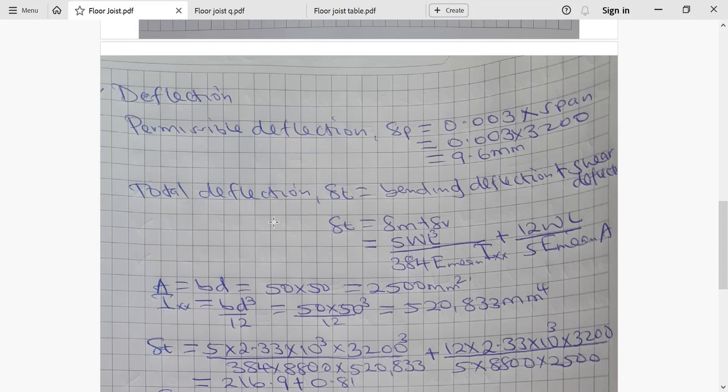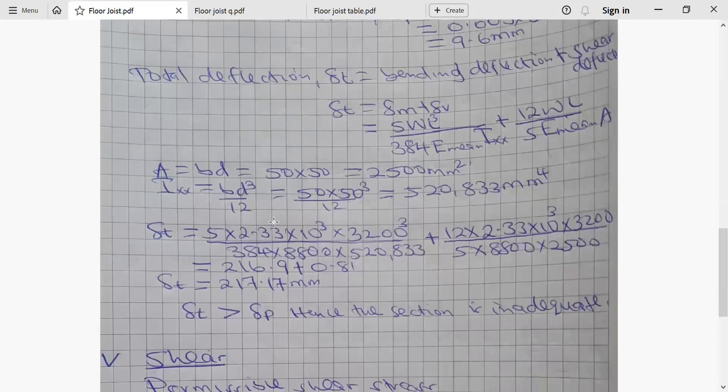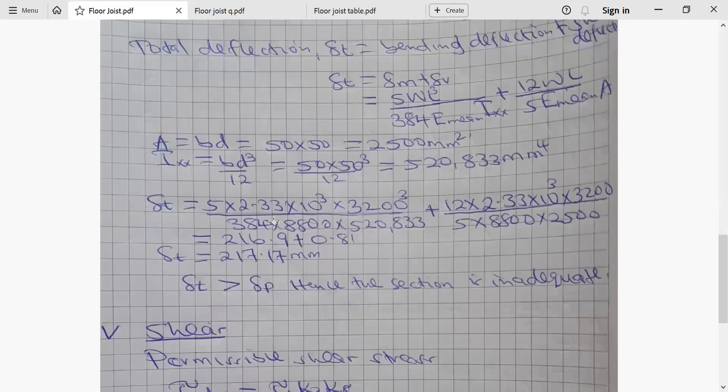The area of the section can be obtained by taking BD, which is 50 by 50, 2500 millimeter squared. And second area moment along XX, Ixx is obtained by BD cubed over 12, which is 50 by 50 cubed over 12, giving us 520,833 millimeter power 4. Hence, if we substitute, we have converted meter to millimeter and all kilonewtons to newtons. This will give us a total deflection of 217.17, but permissible is 9.6.